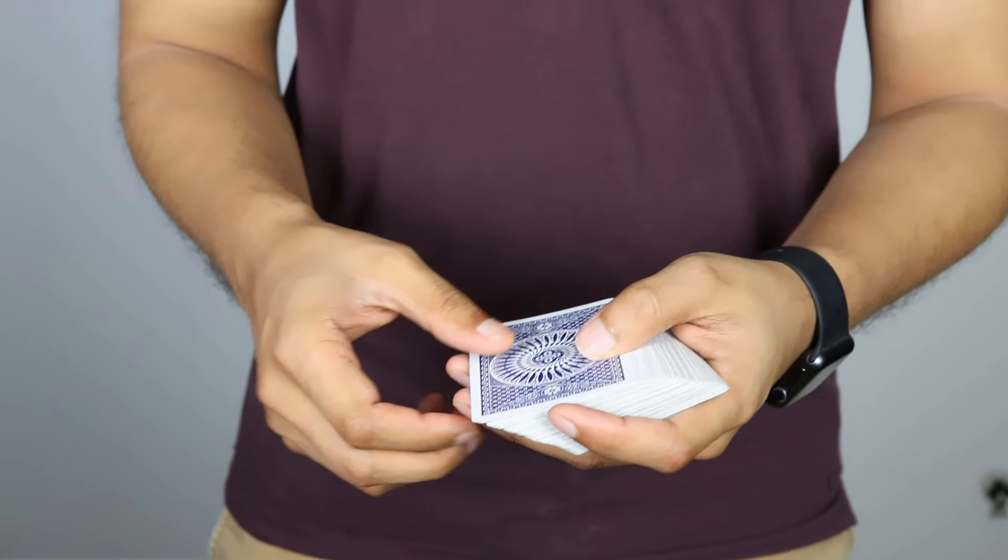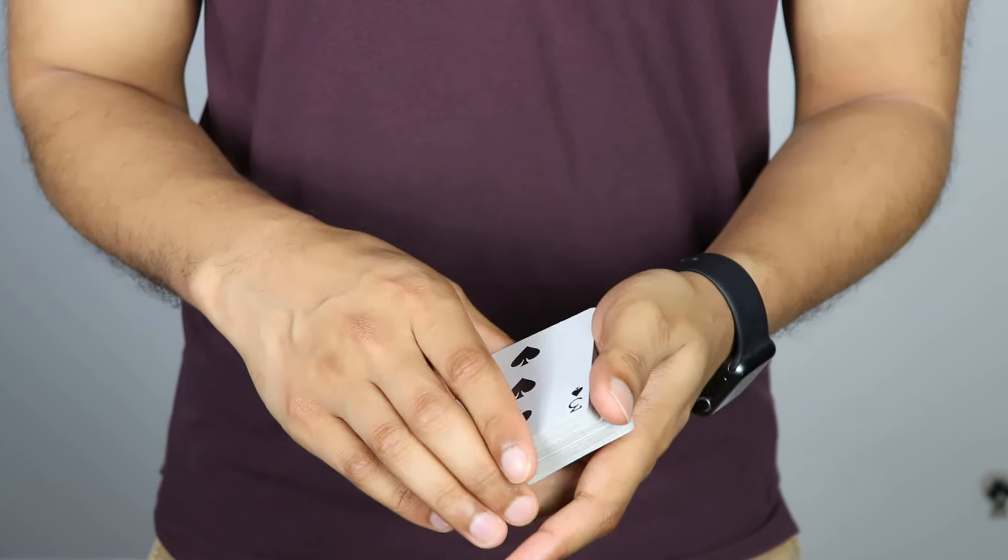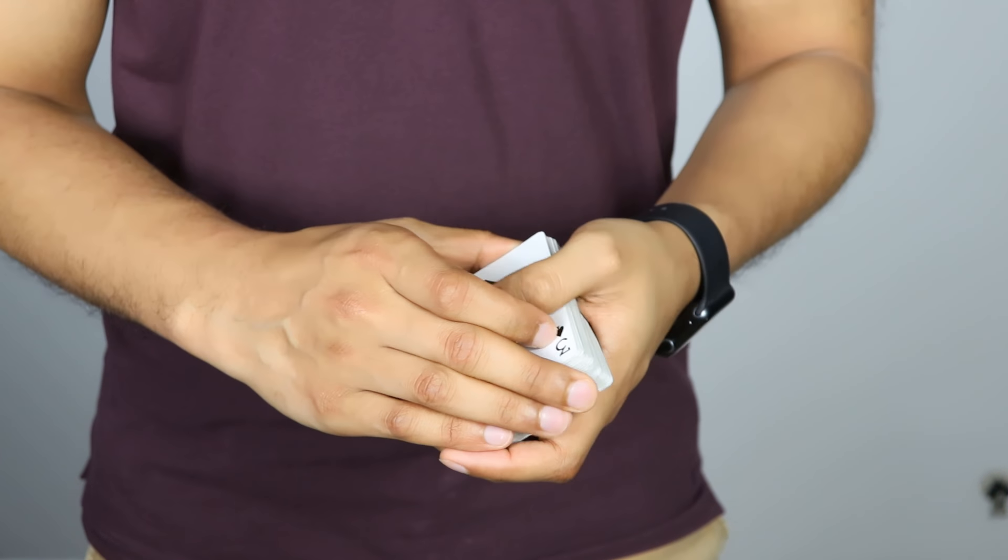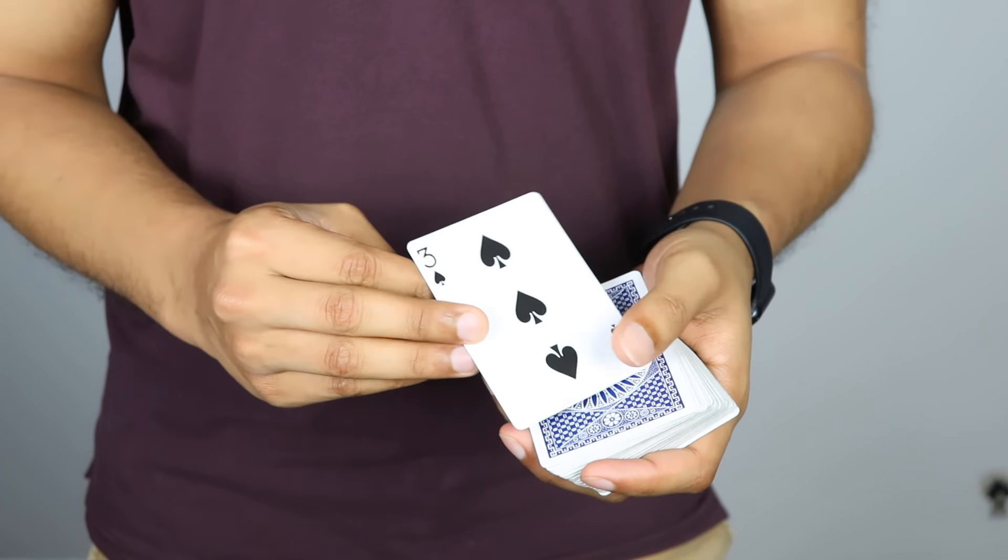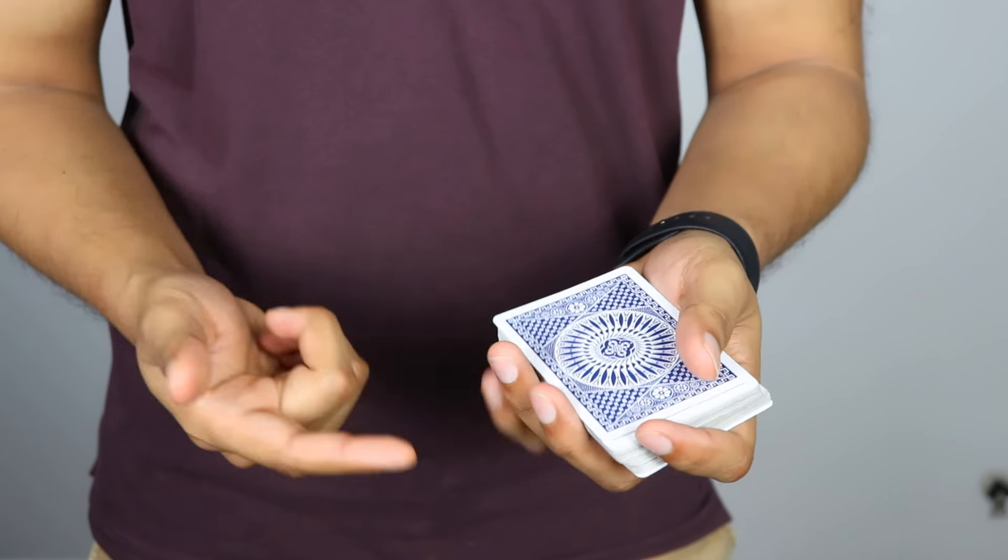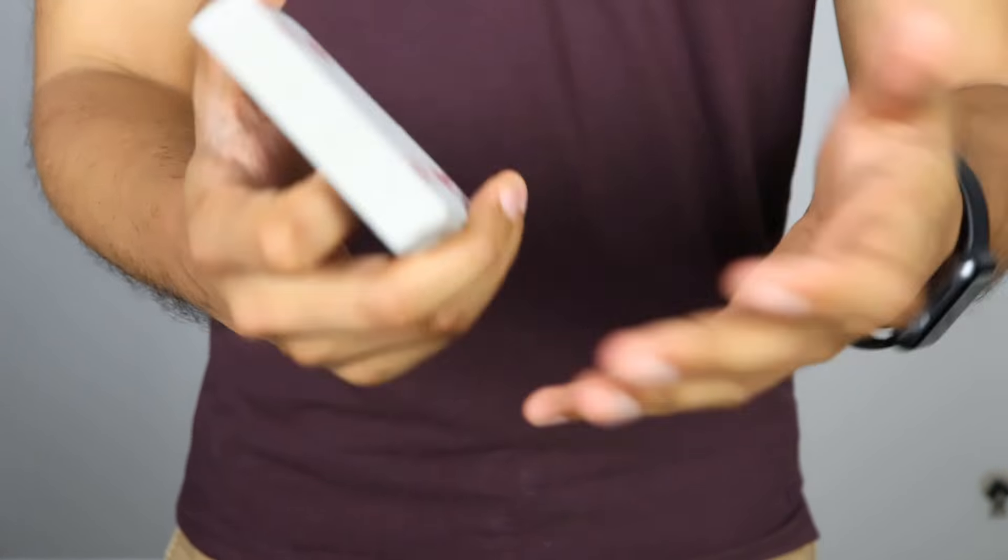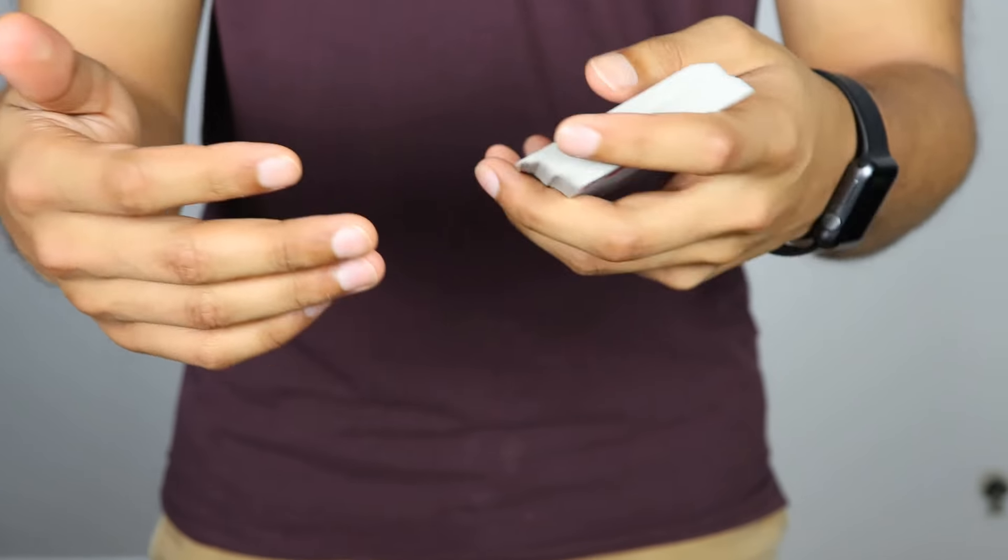Okay, so for the most part the pass looks like this. We have a card here, let's say three of spades. We'll leave it right here and then doing the pass we just control it to the top of the deck and the top and bottom halves are swapped. Now you might be saying, well I clearly saw it happen, your swap sucks.